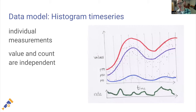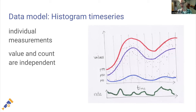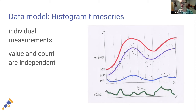We also have histograms, sometimes called distributions. Here you have individual measurements and instead of just recording the last value, you capture both a count and the value so you can speak independently about the count and the values. What I've drawn here is a distribution: on top, red, purple, and blue showing quantiles — P99, P50, P10 — telling you where the distribution of latency or some other value is. On the bottom, a rate plot showing how many points there were per unit of time. A histogram is the most expensive type of metric data because it includes two independent pieces of information, and we use it to summarize a whole distribution.